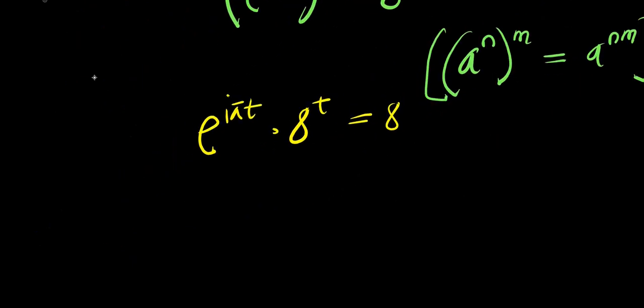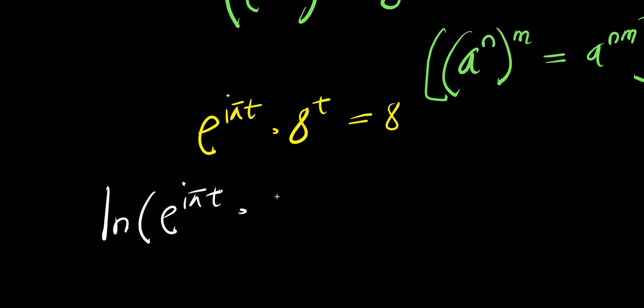I make use of natural log. Taking the natural log of both sides: natural log of e power i times pi times t, times 8 power t equals natural log 8.